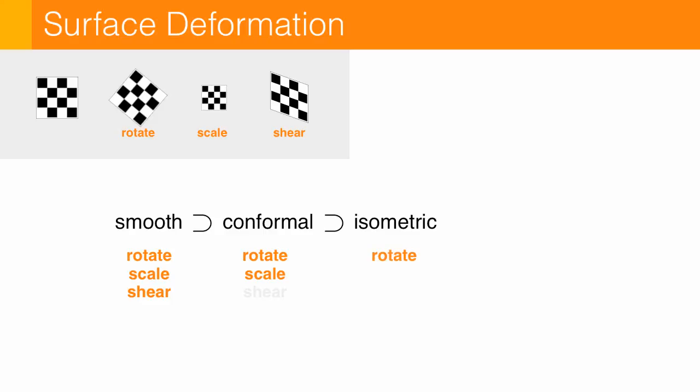If we also ask that there be no scaling, then we get isometries. And finally, if we say okay, no rotation, no scaling, no shearing, then all we're left with are congruences, or in other words, global rigid motions.